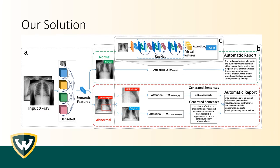Here is our workflow. Part A displays our classification module built on a 121-layer dense convolutional network, which is pre-trained with a large chest X-ray dataset. If the output probability for a target disease is larger than a threshold, an X-ray is annotated with that disease; otherwise it is considered as normal. After disease classification, the localized semantic features used to predict disease are identified and visualized with a heat map, which is generated by Grad-CAM.